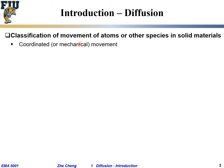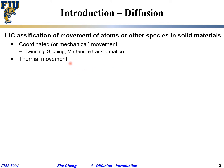The first category can be called coordinated movement, or sometimes mechanical movement. This includes phenomena such as twinning, slipping, or martensite transformation. For these types of phenomena, the atoms move in a highly coordinated fashion, quite often along the same direction and sometimes for the same distance.